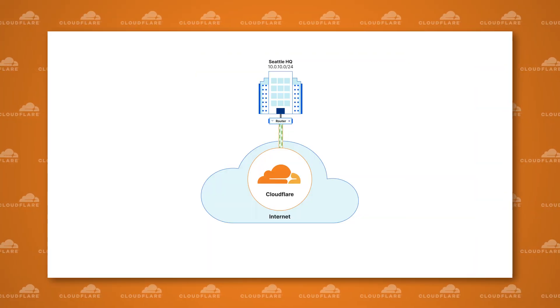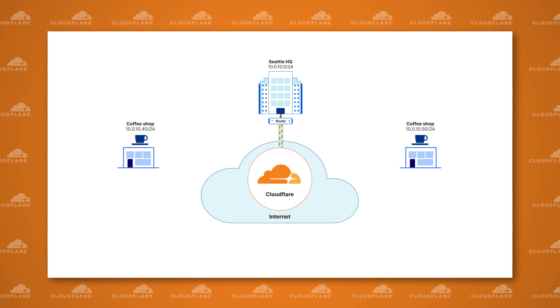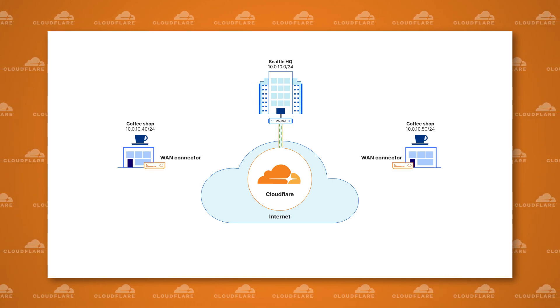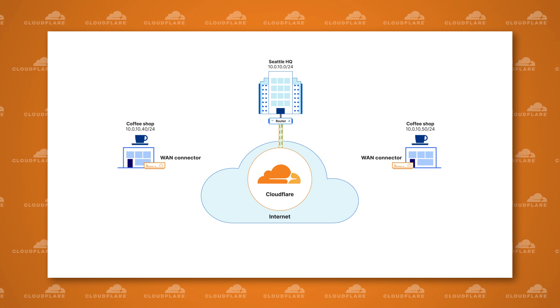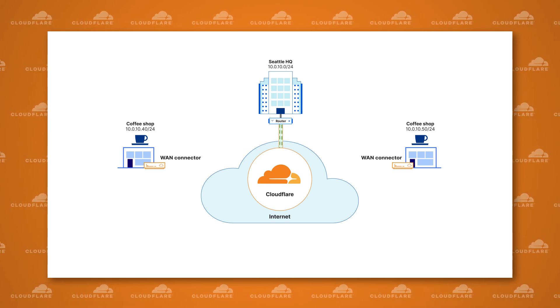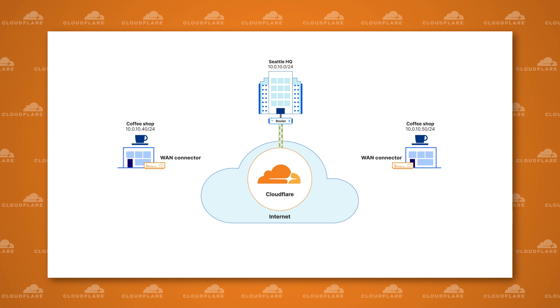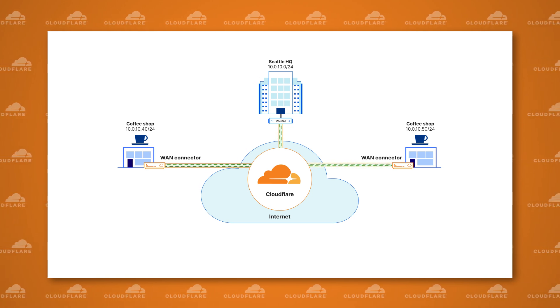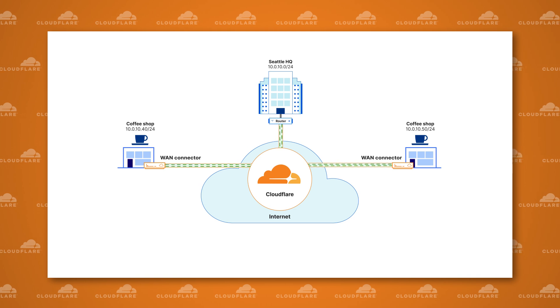Next, let's look at each coffee shop. You can ship out to each location a physical device running Cloudflare's Magic WAN connector — essentially a lightweight appliance that can be plugged into the local ISP router. Each connector creates an IPsec connection back to Cloudflare and each device can be administered remotely via the Cloudflare dashboard. Private network ranges can then be assigned to each coffee shop, and now we have the beginnings of a new modern corporate network.